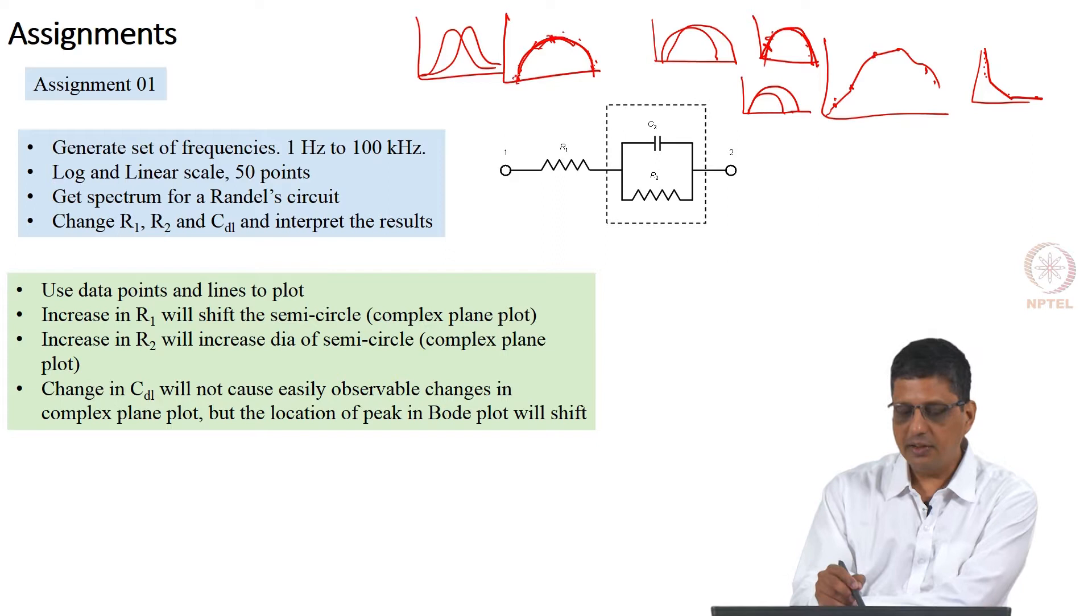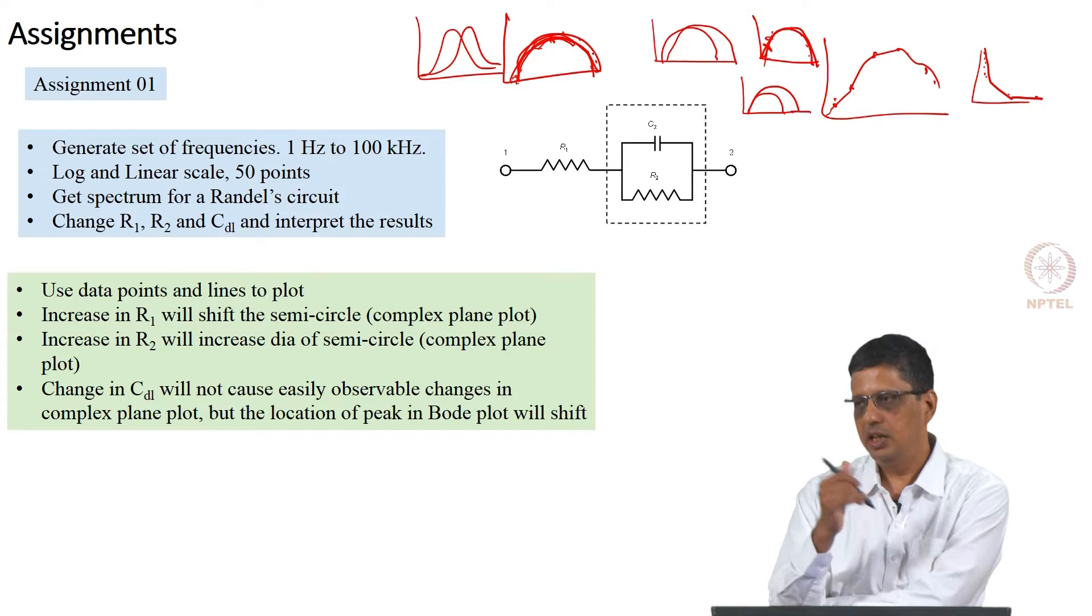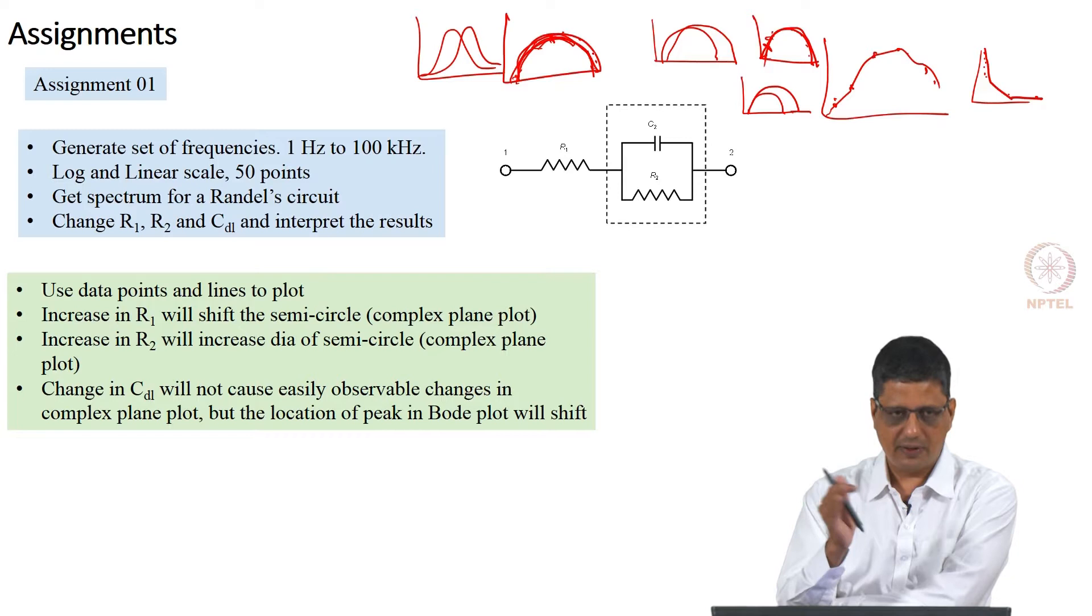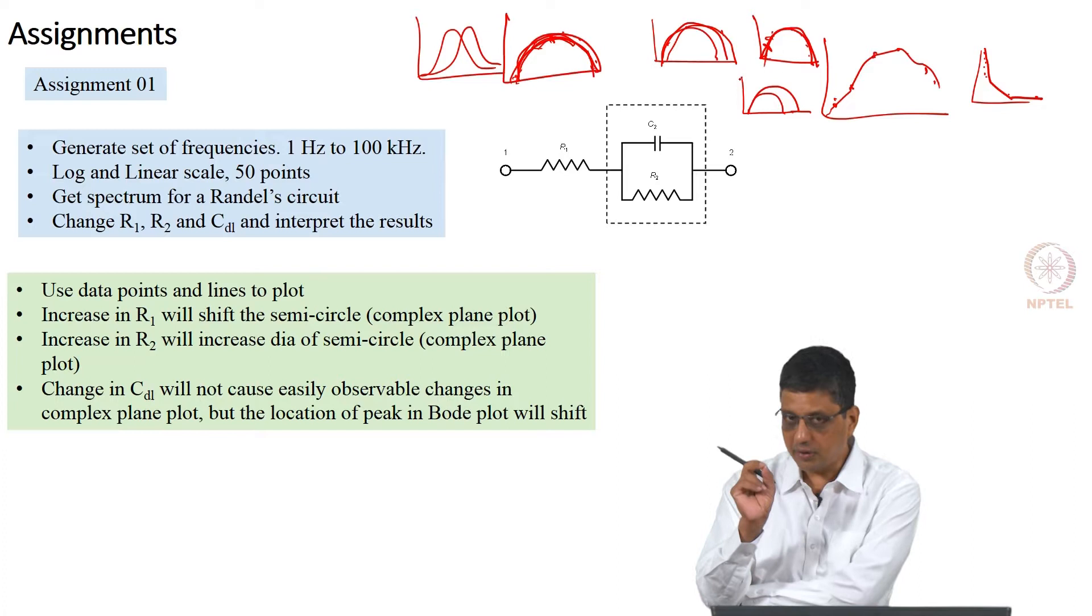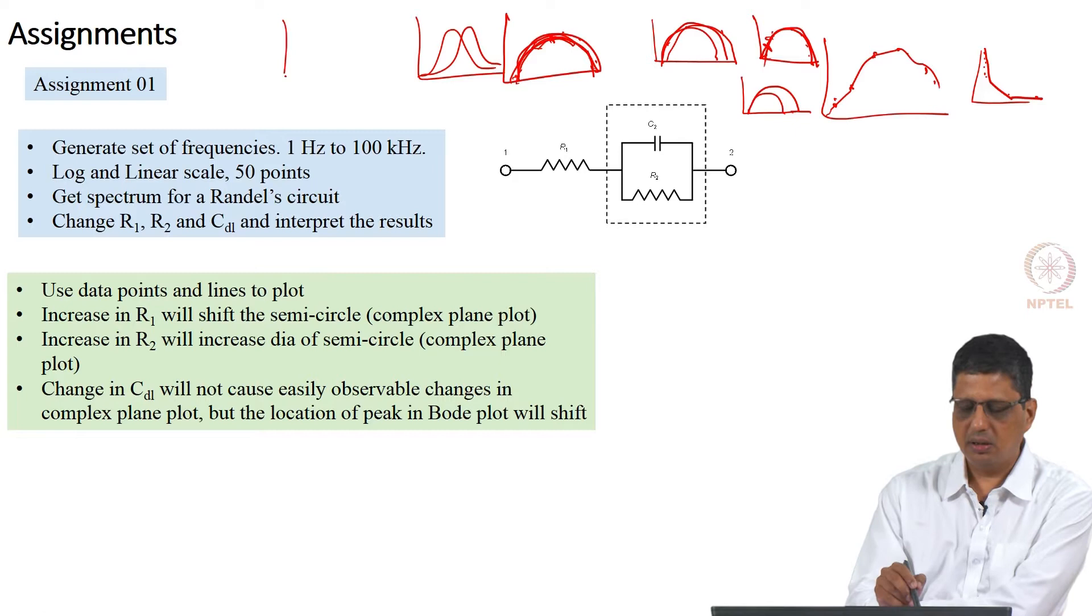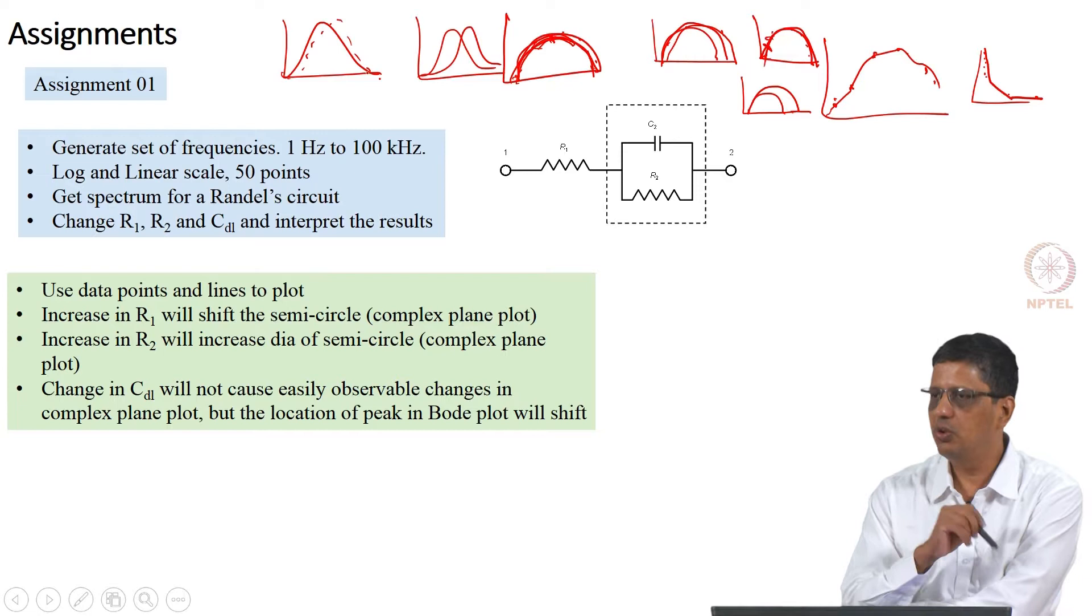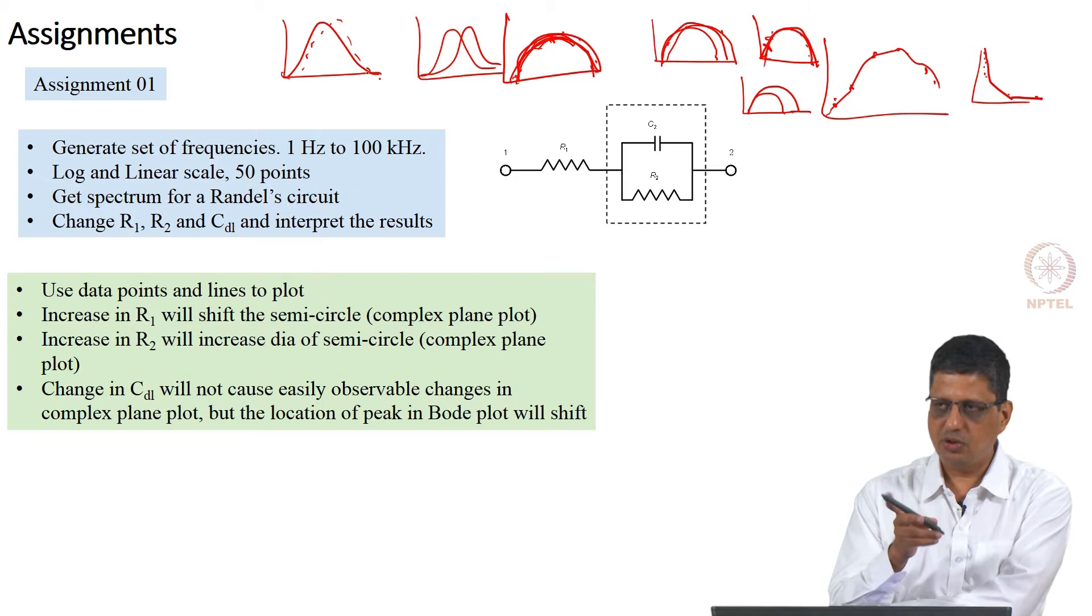If I draw for a given R solution, given R1, given R2, if you change the value of CDL a little and plot one as a continuous line, another as marker, you will think both are same unless you are very careful in noting which frequency point lies where. If you do the same thing in Bode plot, phase for example, one of them will be marker, one of them will be continuous line, you will know there is a difference. So, if there is a change in CDL and other parameters do not change, it is easy to see that in Bode plot. If there is a change in R1, R2, it is easy to see that in complex plane plot.